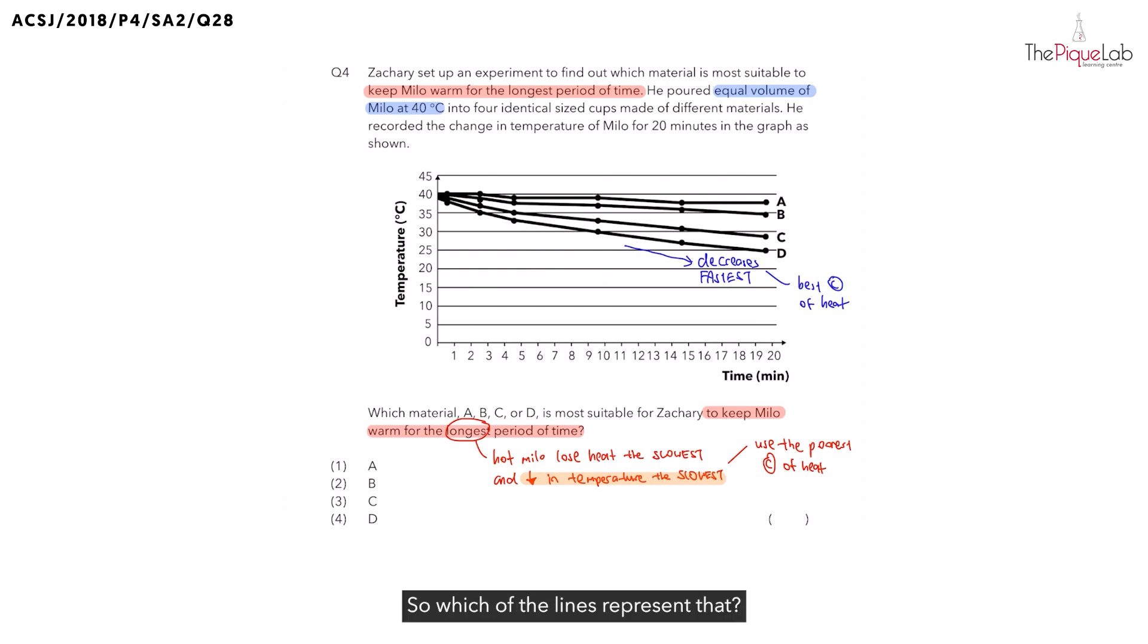So, which of the lines represent that? Now, you can see the temperature decreases the slowest for material A. And since it decreases the slowest, what can you conclude about A? A must have been the poorest conductor of heat. So, let's write this down. Poorest conductor of heat. And this is what we want. Therefore, which material should we choose? We should choose material A. That's why the correct answer should be option one.